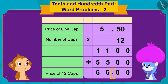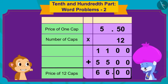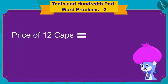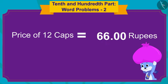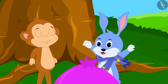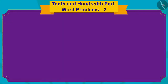Now I get it. If I put the decimal point here, there will be only two digits — or two zeros — after the decimal point. Oh, wow! I will earn 66 rupees by selling 12 caps. On saying this, Bunny started dancing happily.